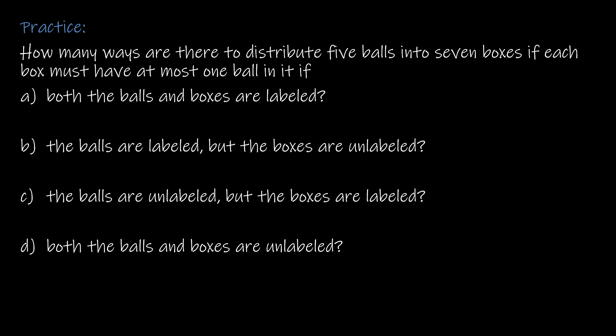For part A: five balls and seven labeled boxes — both balls and boxes are labeled. For each ball, I can place it in any of the remaining boxes: 7 × 6 × 5 × 4 × 3, which is the same as P(7,5) = 2,520. Because both are labeled, order matters.